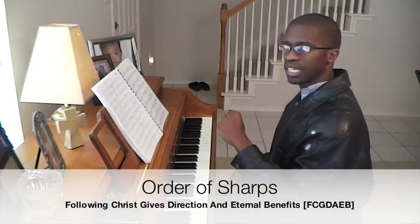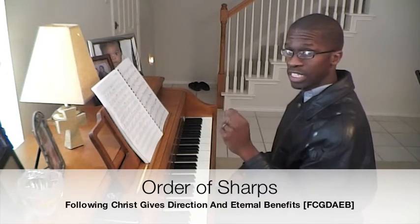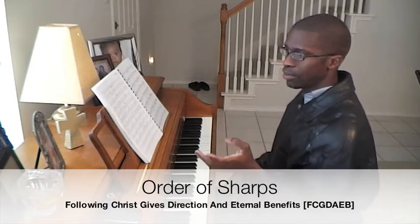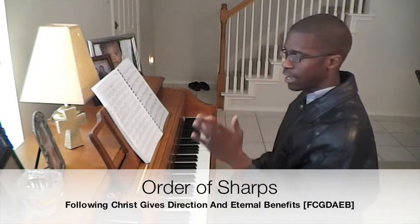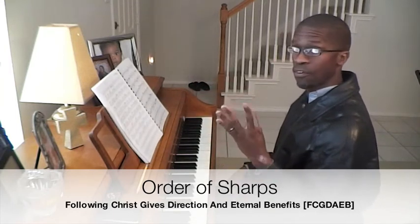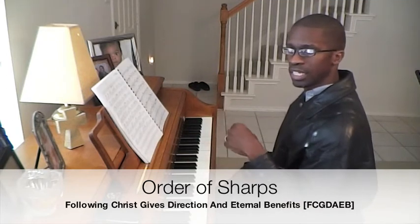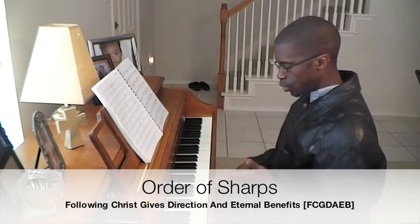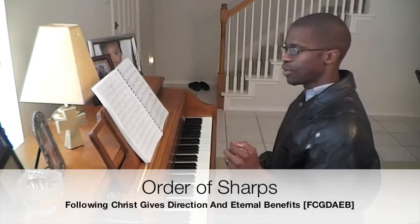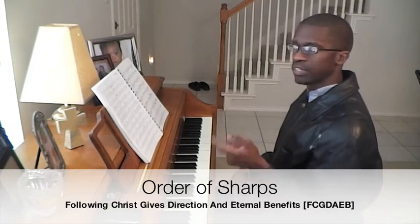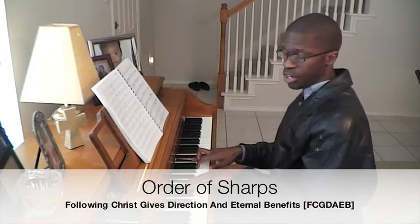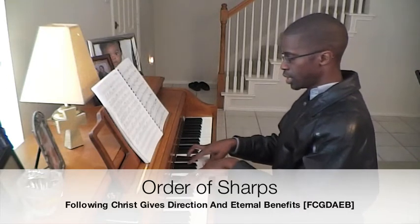When I go from C to the key of G, the first sharp in G is going to be F. If I go to D, I'll have an F and a C. If I go to the key of A, I'll have an F, a C, and a G — Following Christ Gives. If I go to the key of E, I'll have four — Following Christ Gives Direction — so F, C, G, and D. When I play an E scale, I'll have four sharps: F sharp, C sharp, G sharp, and D sharp.